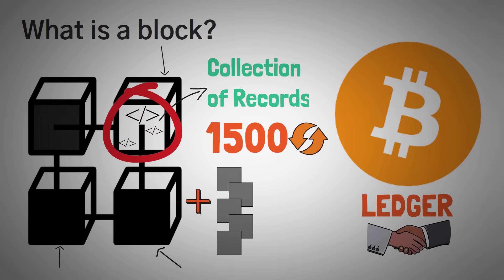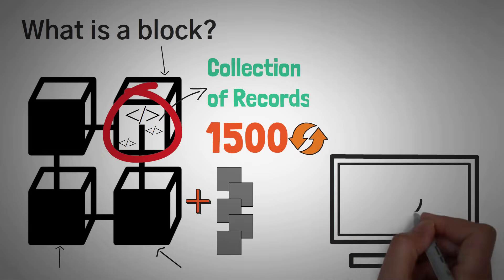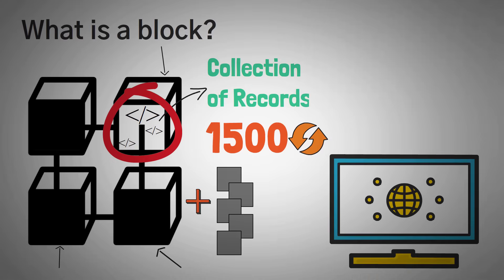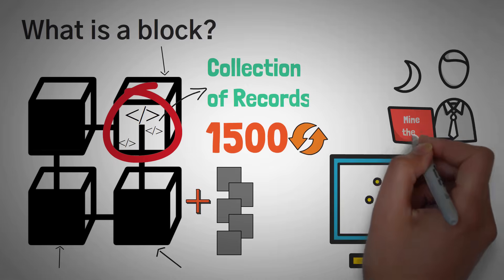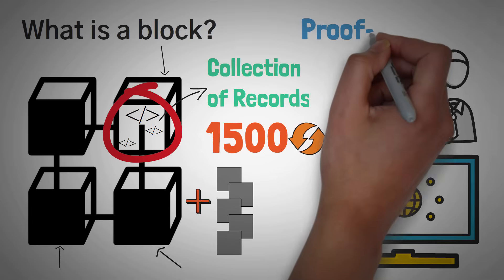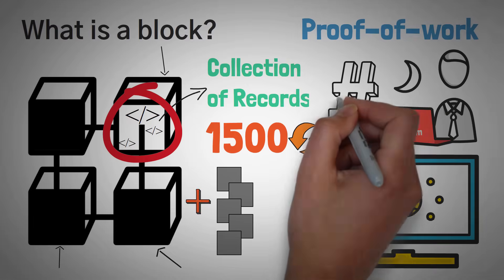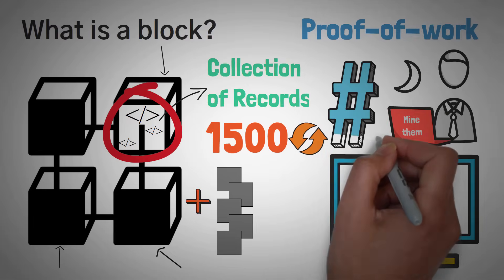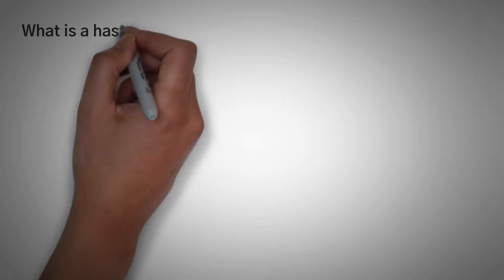What do we do when these blocks are full? We add them to the network. We do something called mine them. And since Bitcoin is a proof-of-work model, we have to prove that we mined them. This brings us to something called a hash. So the next big question is: what is a hashing function?